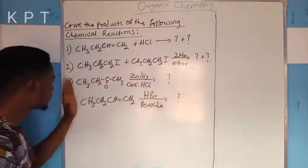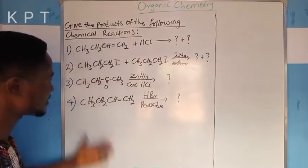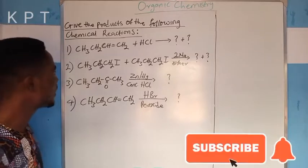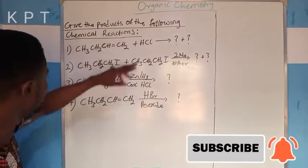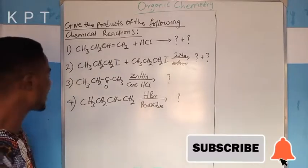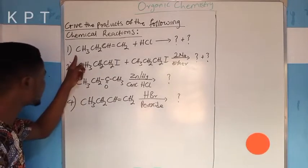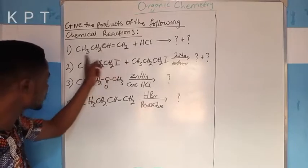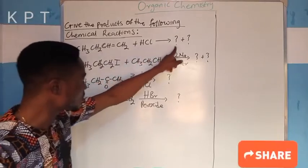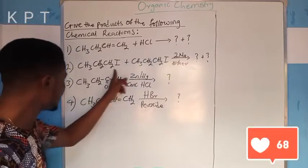In today's lesson, I'm going to be running through very quickly some of the practice problems in organic chemistry. The question says: give the products of the following chemical reactions, and I have about four of them here. The first one is a situation whereby alkene reacts with hydrogen chloride — what will it give? The second is alkyl iodide.